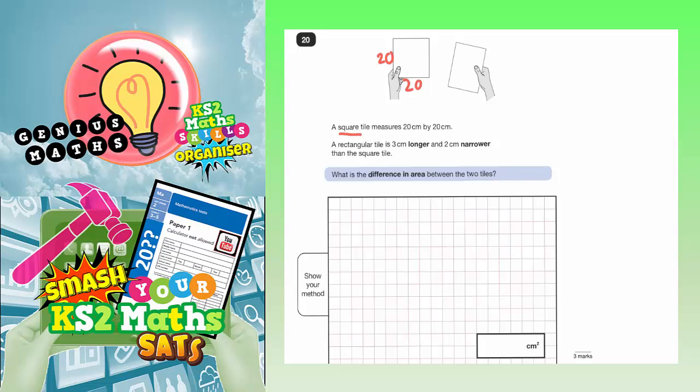A rectangular tile is 3cm longer and 2cm narrower. So 3cm longer than 20 would be 23 and 2cm narrower would be 20 take away 2, so 18. So the rectangle is basically 23 by 18. Now we need to find the difference in area between the two tiles.